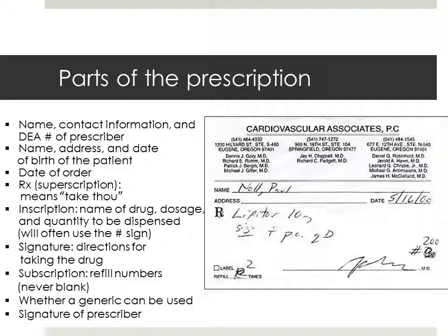Signature — SIG — provides instructions to patients on how to take the medication. The subscription part of the prescription includes the refill numbers and it's never blank. There's a box to check on the newer prescriptions whether a generic can be used, and then the signature of the prescriber. The amount of medication contained in the prescription bottle must be listed.